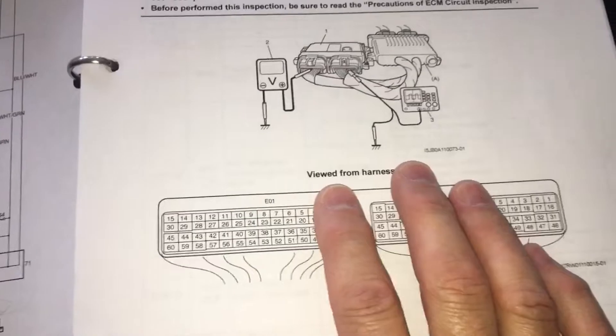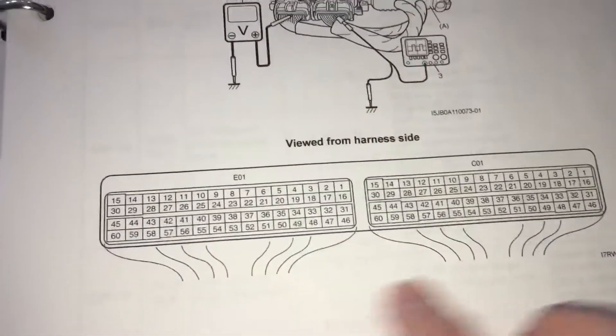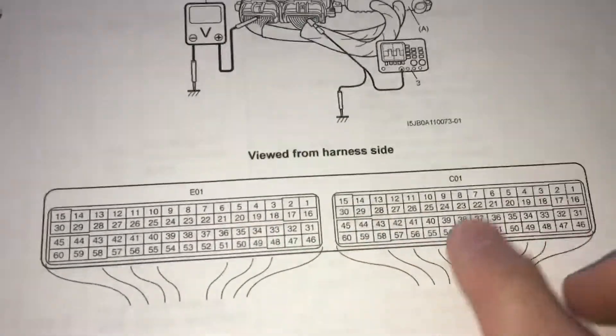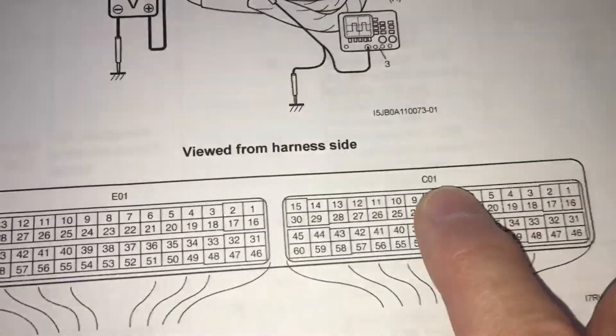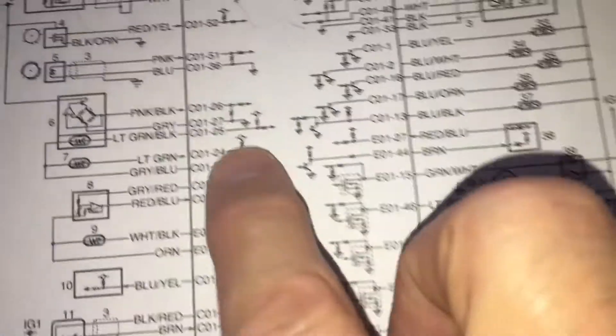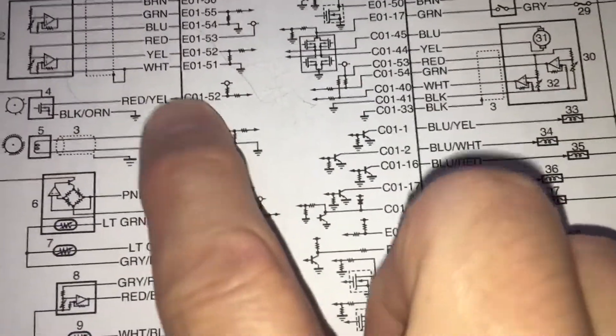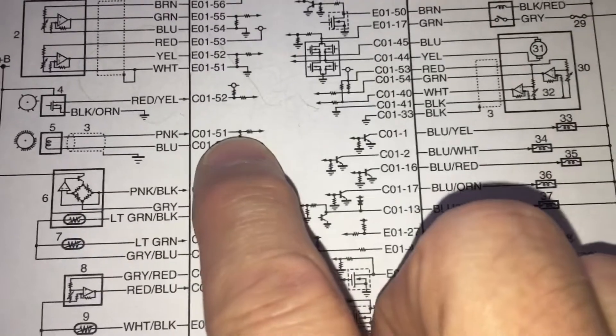So we'll use the manual, we'll correlate the connector detail. So here's the ECM, in the case of the SX4, connector layout, tells you the drawing. If we look at the detail, C01. So that's the connector designate, and then the pin number.